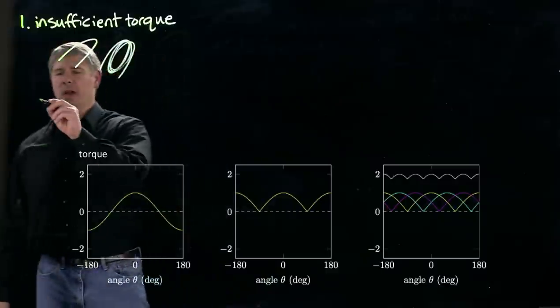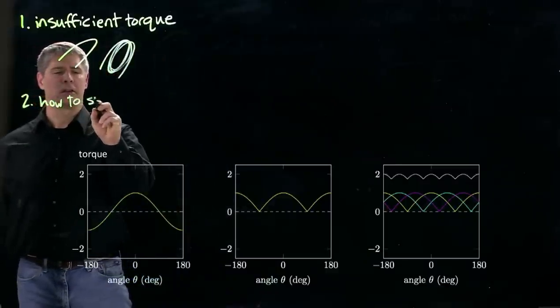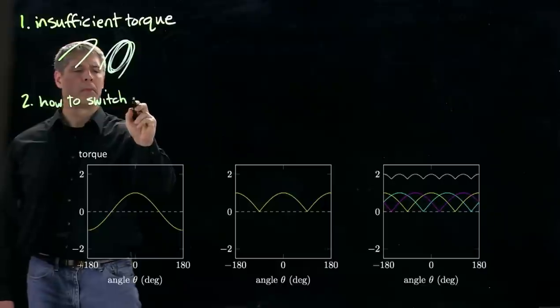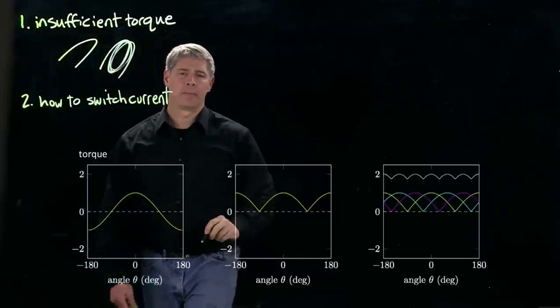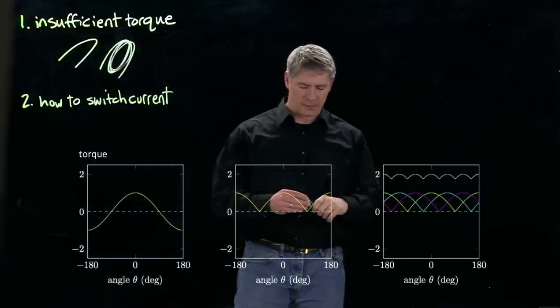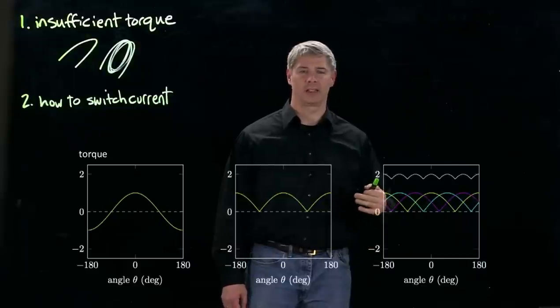The second problem we have to address is how to switch the current, and the solution there for brushed permanent magnet motors is called a commutator and a set of brushes.